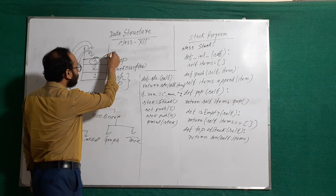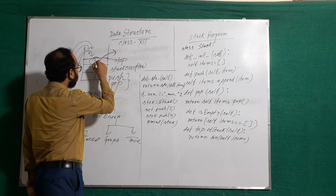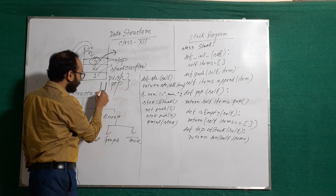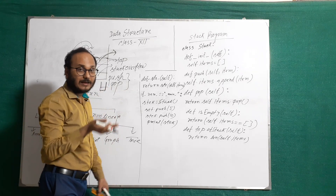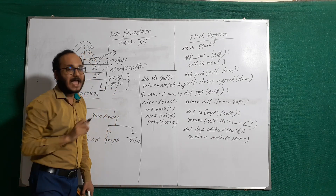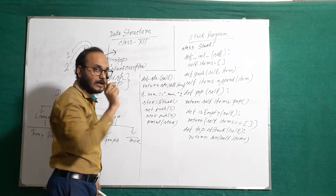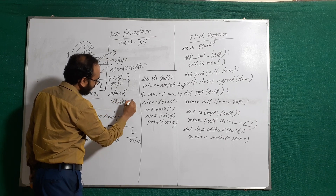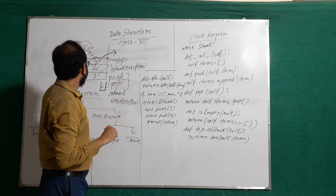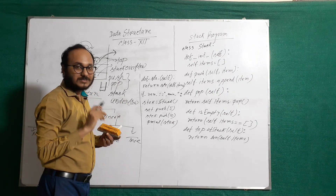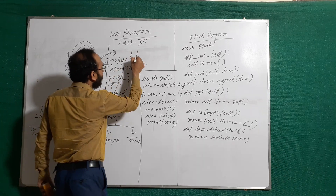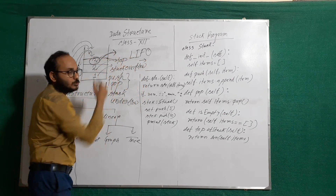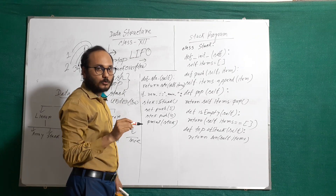Starting from the top of the stack, we delete 3, then 2, then 1. If the stack is empty and we try to delete an element, this situation is called stack underflow. Stack follows the LIFO algorithm — Last In, First Out.